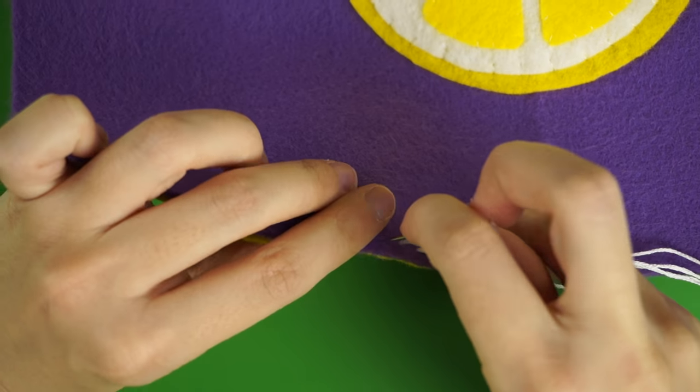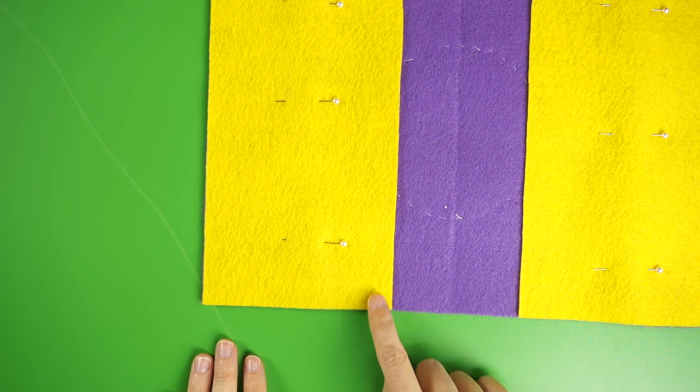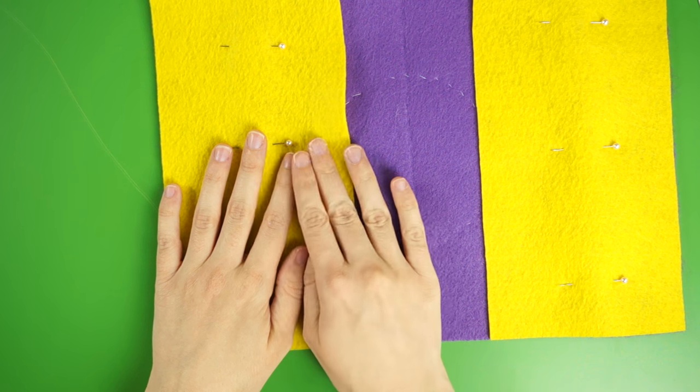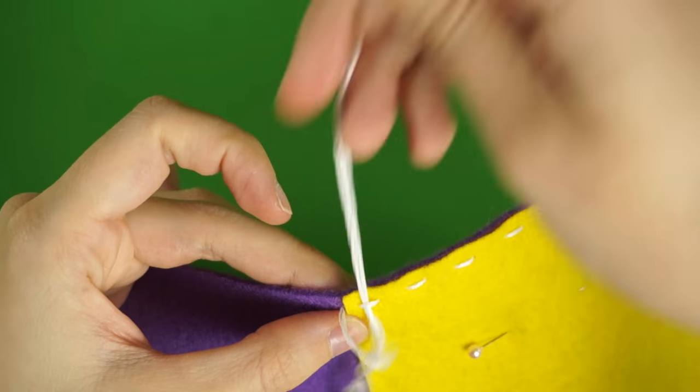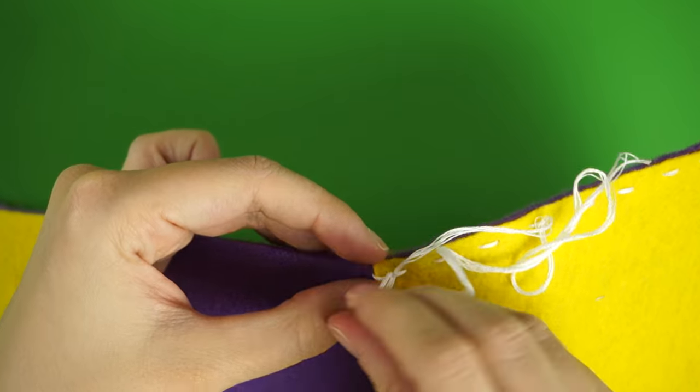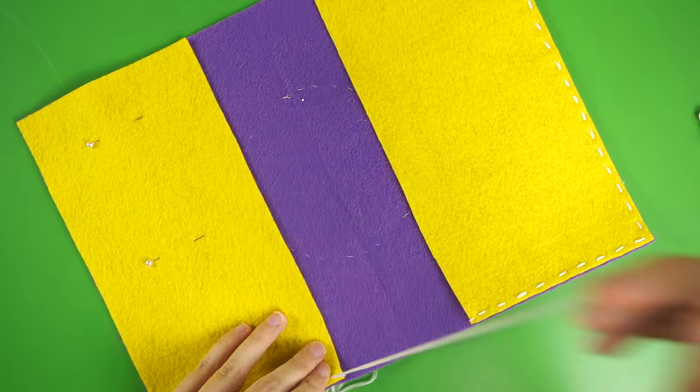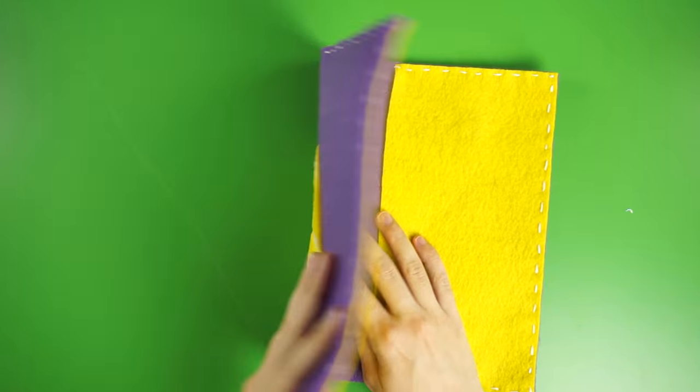You'll need to stop sewing once you reach this other inside corner so you can leave the pocket open for your travel documents to fit inside. When you get to that point, tie a knot to secure it and trim off the excess floss. Follow the same steps for the other pocket with a new piece of embroidery floss and your wallet is ready to go.